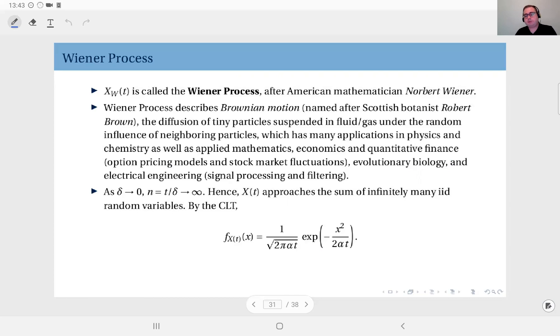Why is the Wiener process so important? It describes what we call Brownian motion, named after Scottish botanist Robert Brown. What does a botanist have to do with random processes? Robert Brown observed the behavior of pollens in water droplets. He was investigating the pollination of flowers, and during his studies he observed the pollens and how they move suspended in water. He came up with a mathematical description of this. The Wiener process perfectly describes Brownian motion: the diffusion of tiny particles suspended in fluids or gases under random influence of neighboring particles.